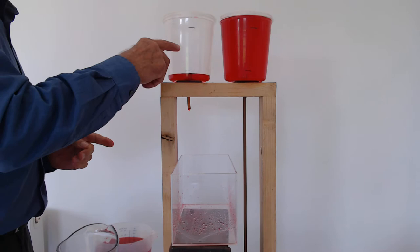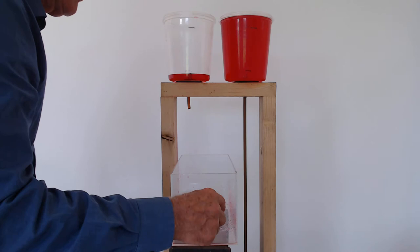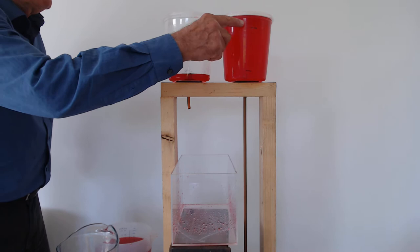This experiment is about air pressure. Now as you can see I've got two identical plastic beakers and one of them has a very short length of rubber tubing sticking out a bit and the other one has a long length of rubber tubing that goes right down to the floor over a meter below.